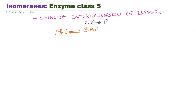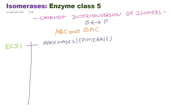Isomerases are subclassified under EC 5 series. Subclassification EC 5.1 includes those isomerases which catalyze racemization or epimerization, so they are called racemases or epimerases, and they belong to the EC 5.1 series.